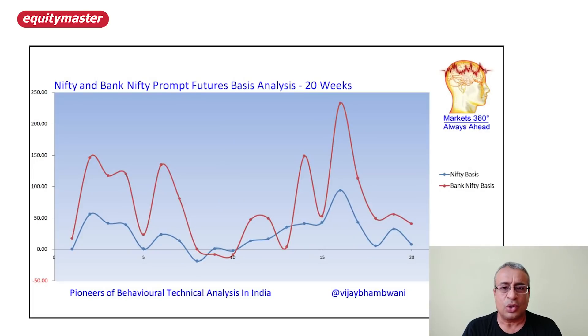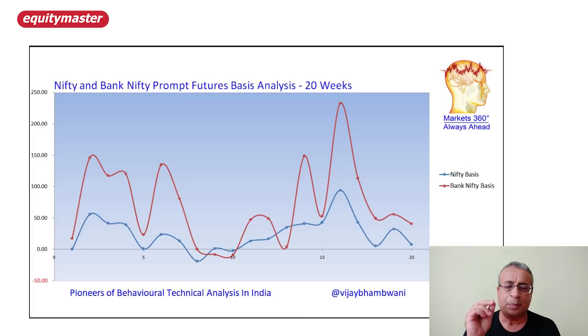The second indicator that I want you to watch is the basis. What is the basis? Don't get intimidated — this complicated-sounding word is nothing but the premium enjoyed by the future over spot. Why do you look at it? Because it is a measure of the risk appetite of two-marshmallow traders. These are guys who roll over their long or short positions to the next trading session. They have a higher risk appetite, deeper pockets. They pay mark-to-market money and span margins to stay put in their trade.